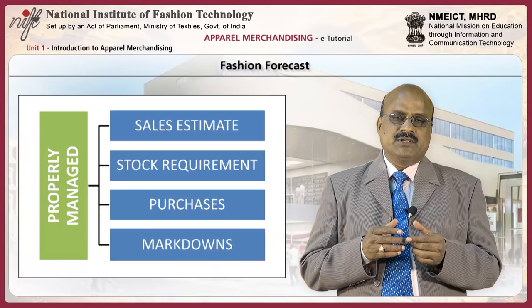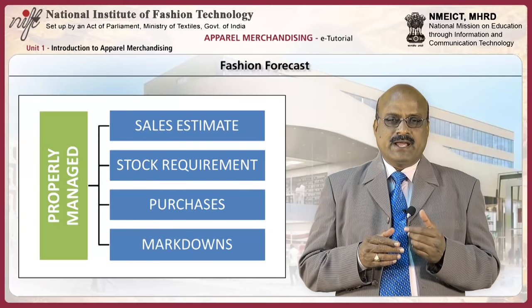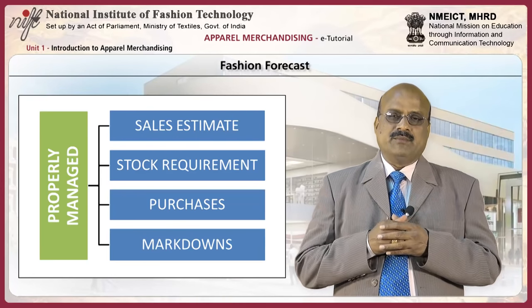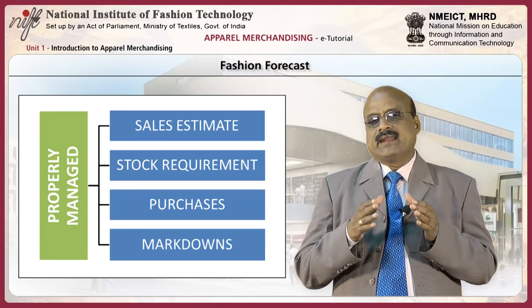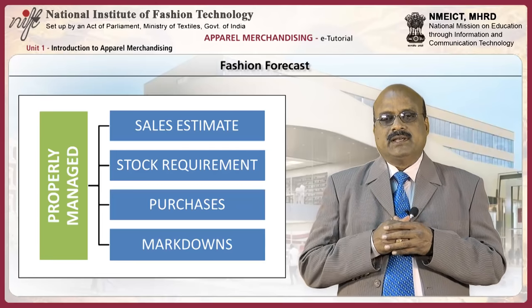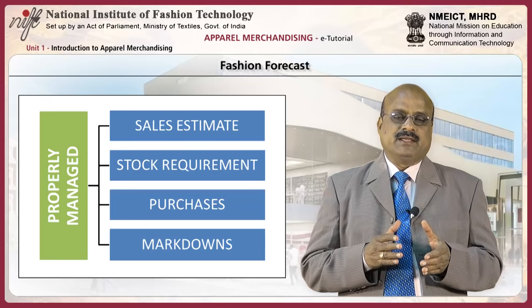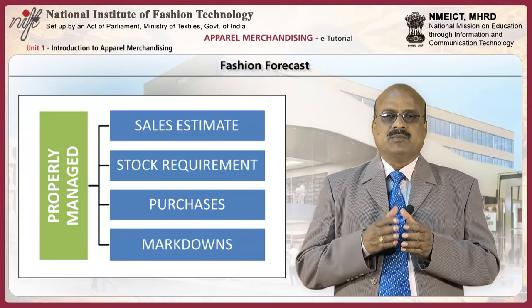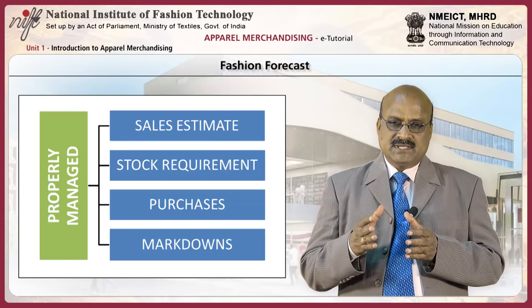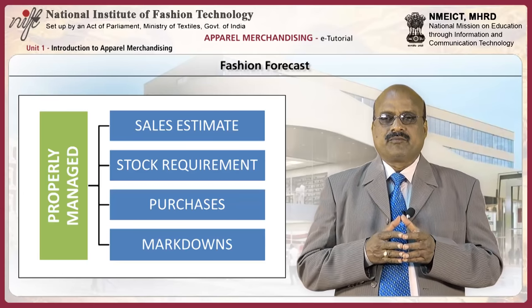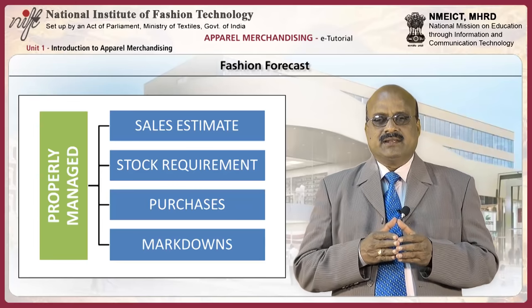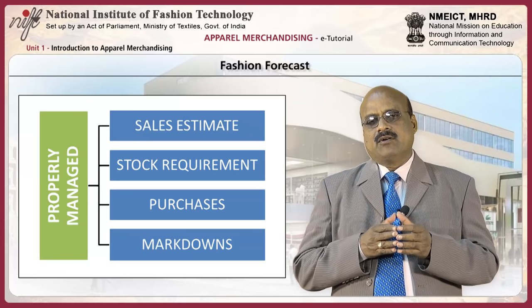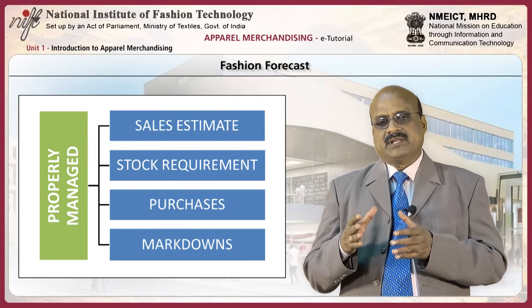Unless potential sales, required optimum stock, purchases, and markdowns are properly managed, a store cannot be successful. This requires proper merchandise planning in terms of estimated sales, optimum stock levels, purchases, and markdowns. This planning is done in terms of value of merchandise, and hence it is often called the dollar merchandise plan.